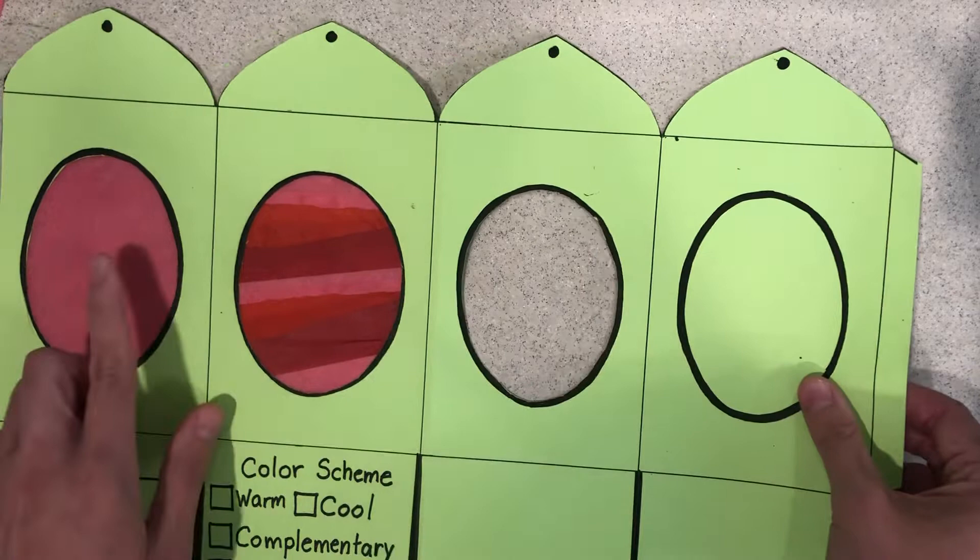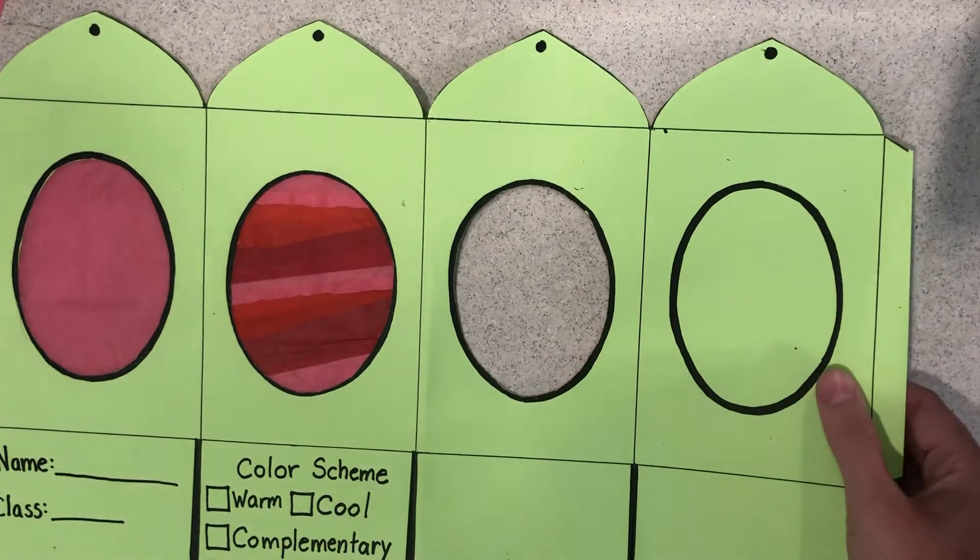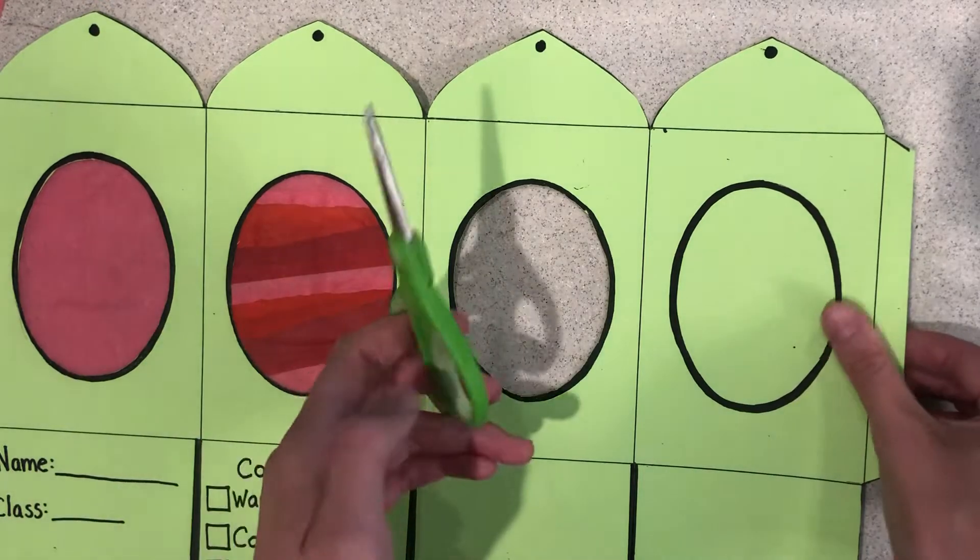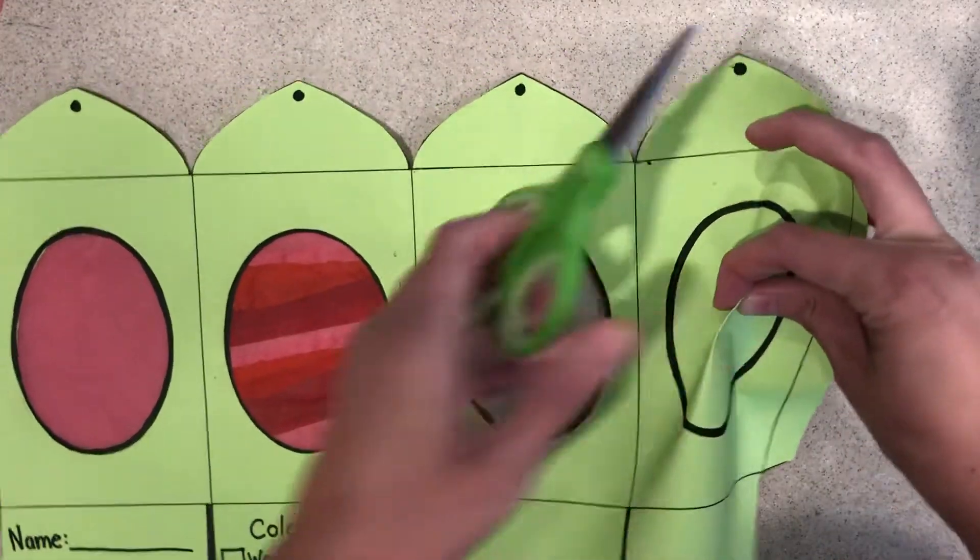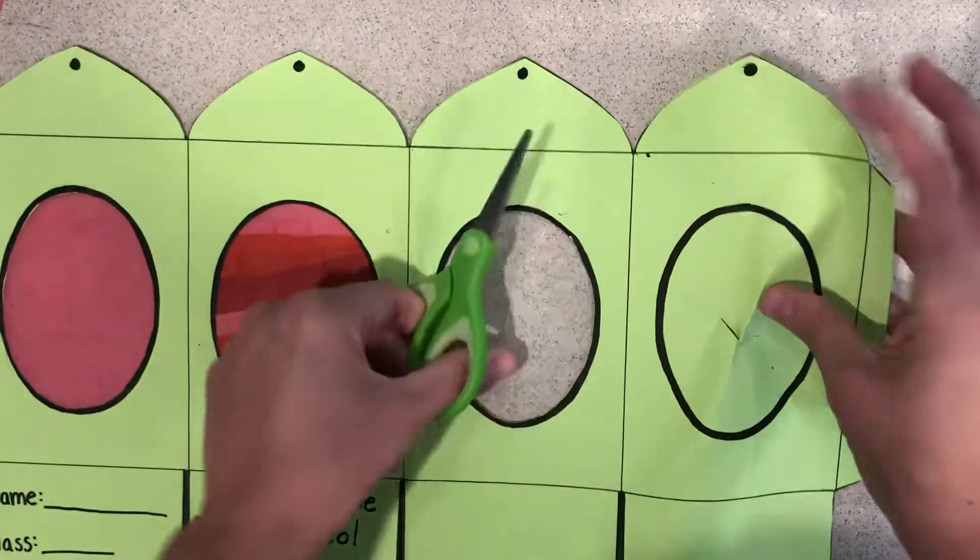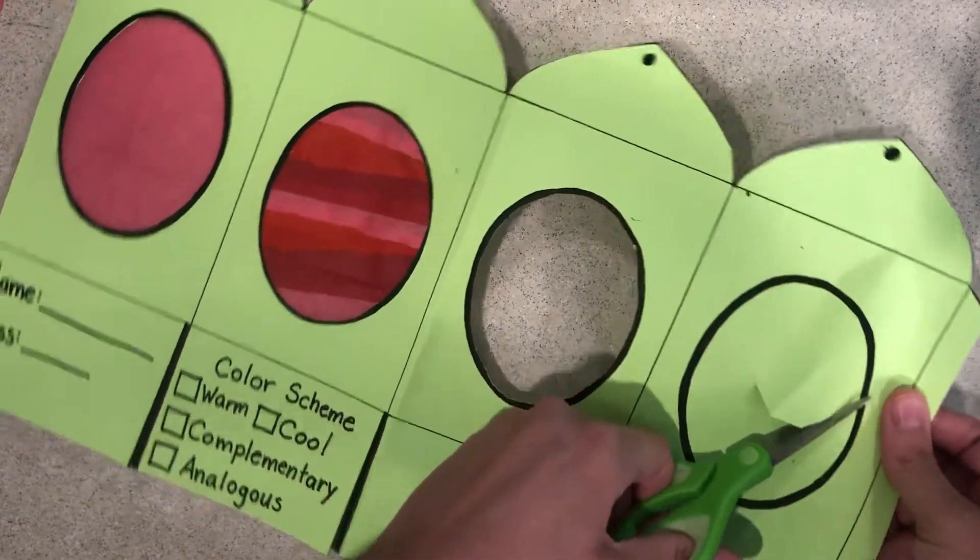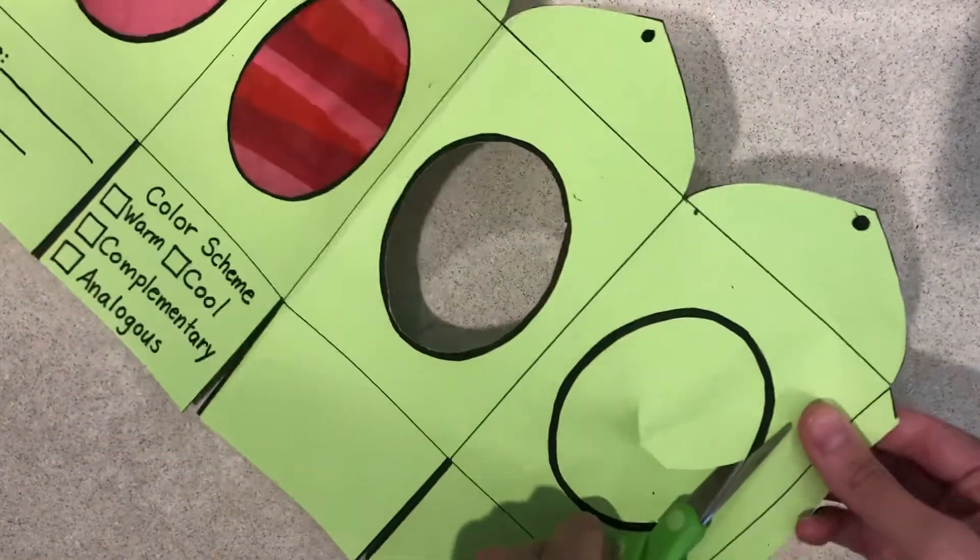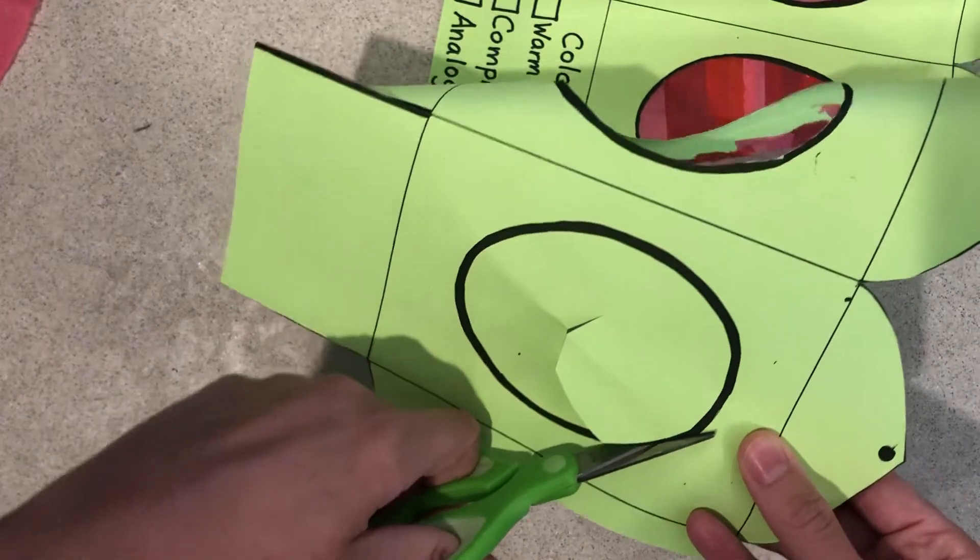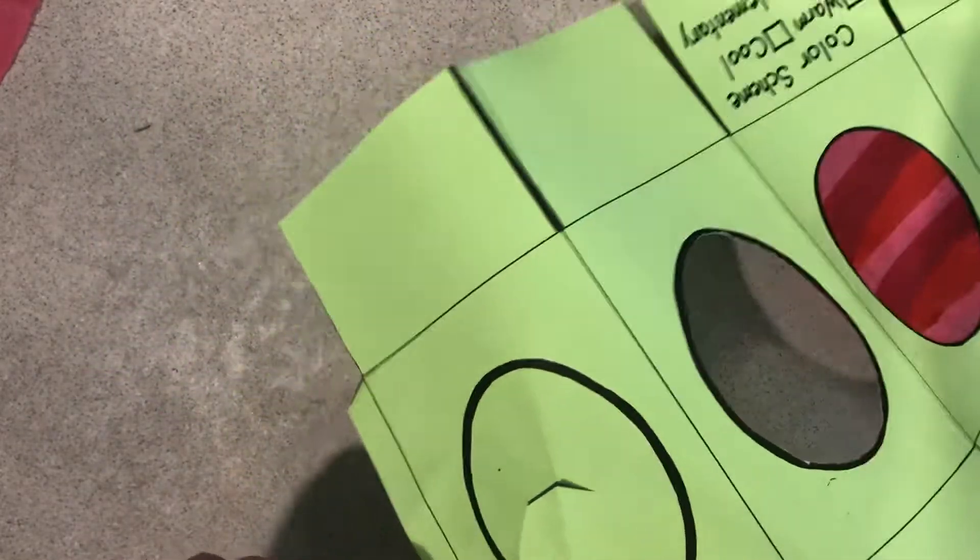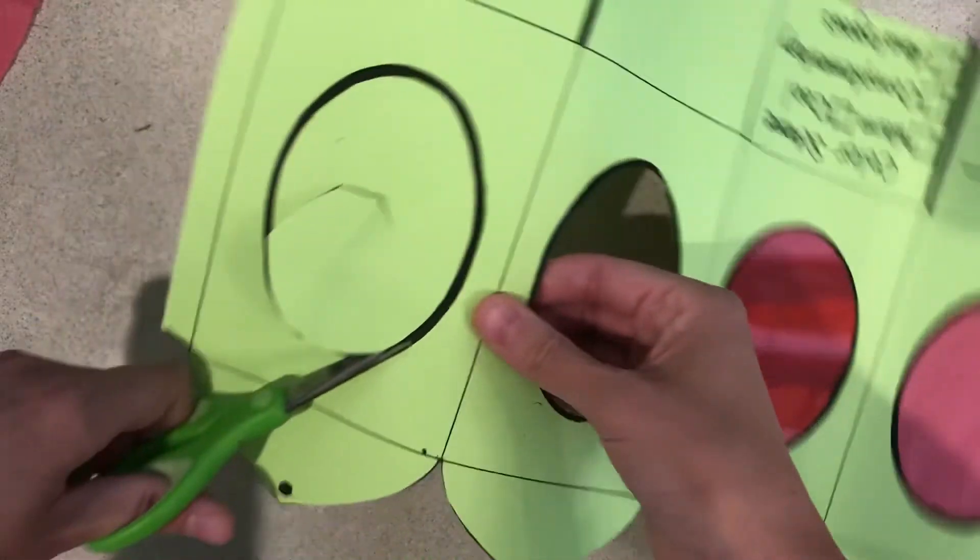I'm going to show you the trick for cutting out inside of a circle. I'm going to fold this in half and pinch it like that and now I have this little opening. I am going to cut in the middle of the black line and I'm going to turn my paper in a circle while I do this.